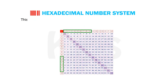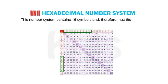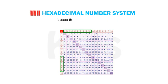The hexadecimal number system contains 16 symbols and therefore has the base 16. It uses the digits 0 to 9 and A to F.